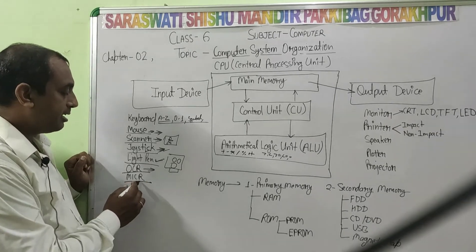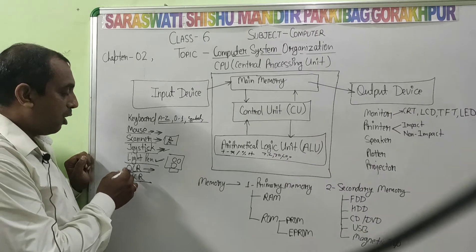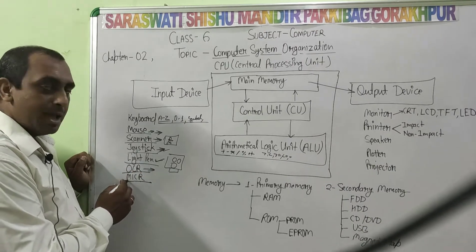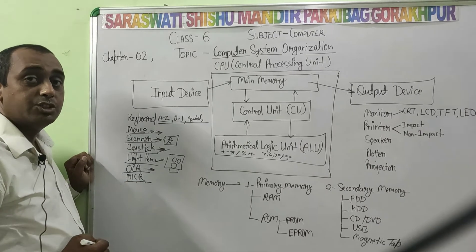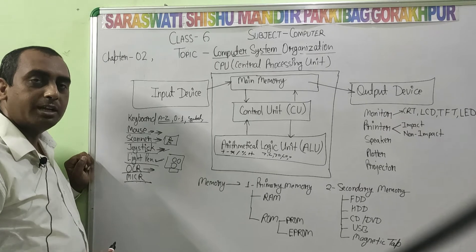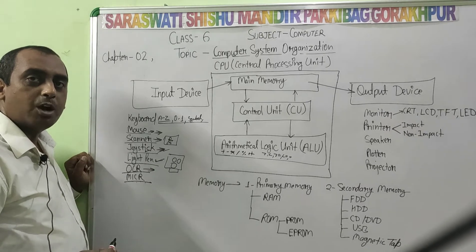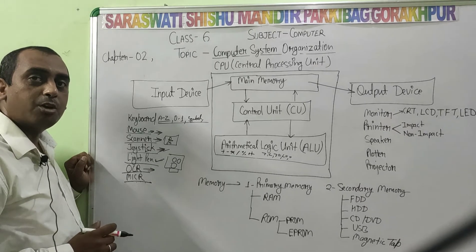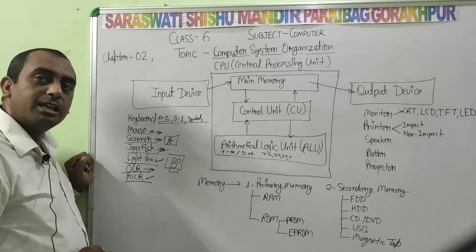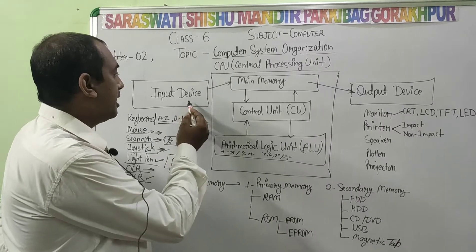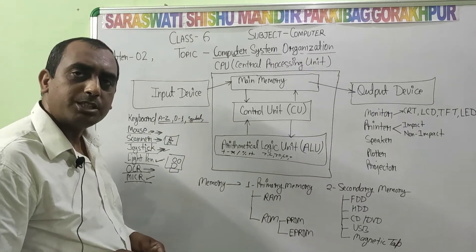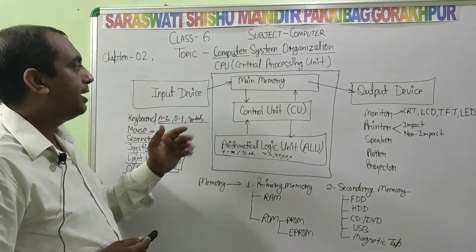The magnetic ink reader (MICR) and optical reader (OCR) are important input devices. MICR is most commonly used in bank cheques, where it stores and verifies the bank coding and cheque coding information. The input device is which device we can use to feed data and instructions into the computer system.